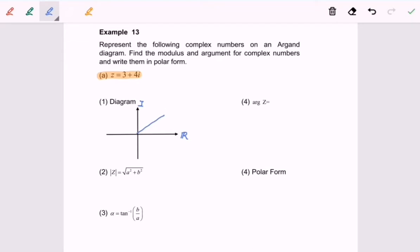Next, second, we are going to find the modulus. Given the modulus of Z is equal to square root of A squared, where A is equal to 3. So A squared, we will have 9 plus B squared, where B is equal to 4. So in here we have 16. So finally, the modulus of Z is equal to 5.